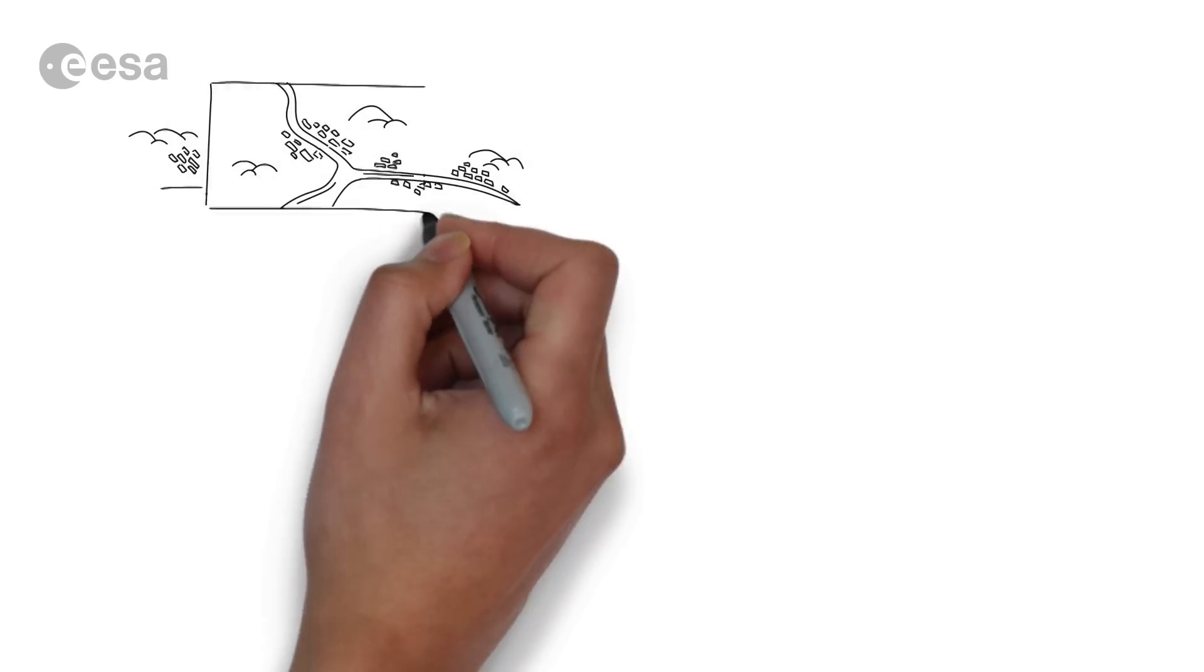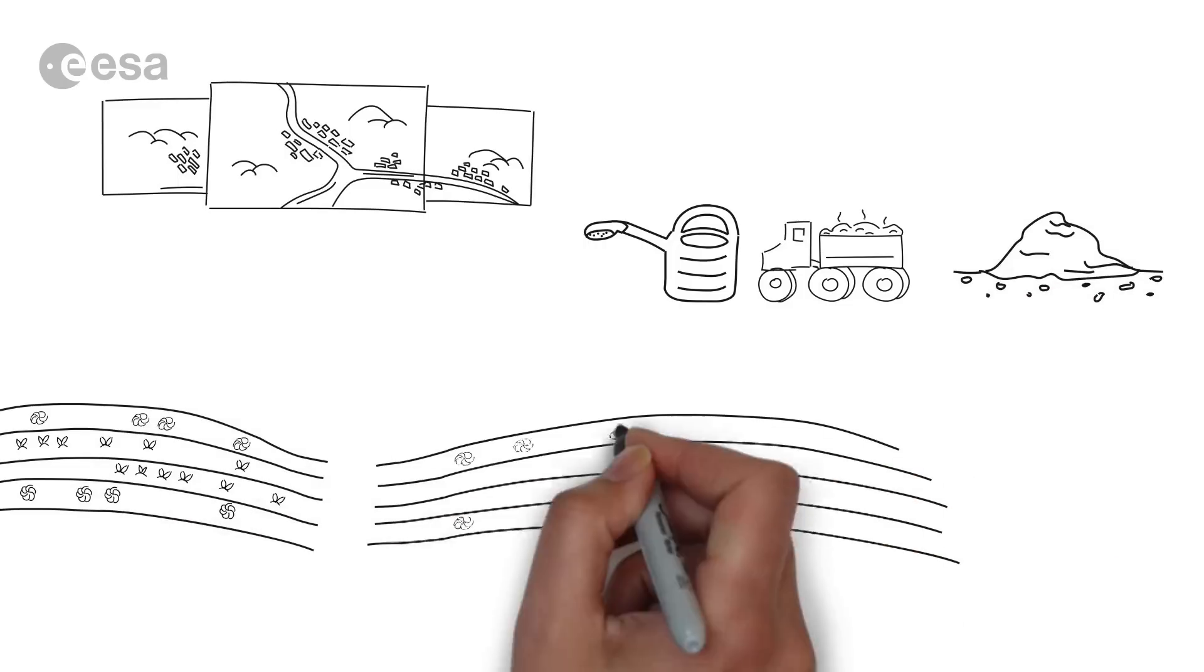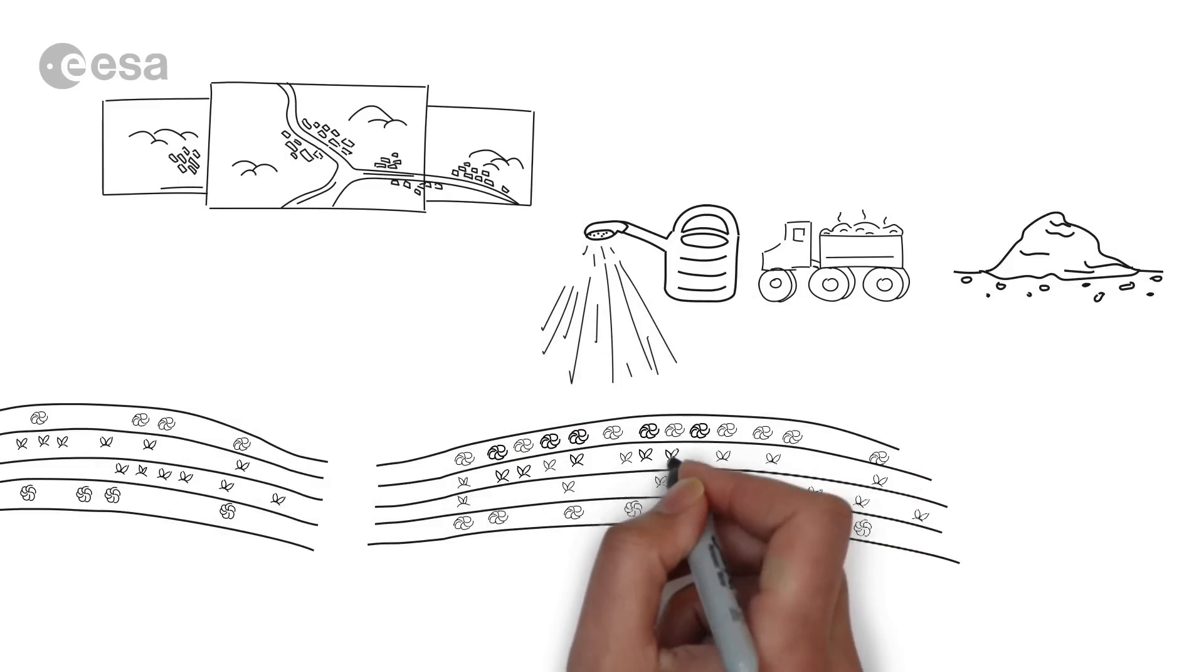Sentinel-2 images will teach us how to handle natural resources like water, manure and soil, because we can see where they are needed and where they aren't.